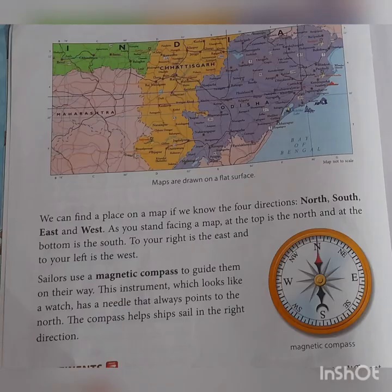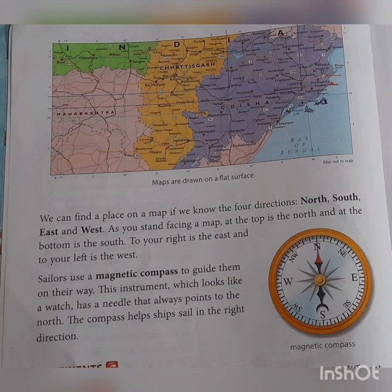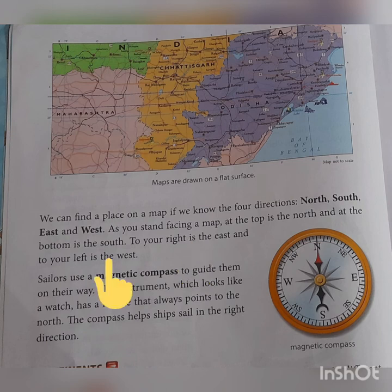We can find a place on a map if we know the four directions. We know that we have four directions: North, South, East, and West. We need to know the directions to find out a place on a map. As we stand facing a map, at the top is North, at the bottom is South, to your right is East, and to your left is West.